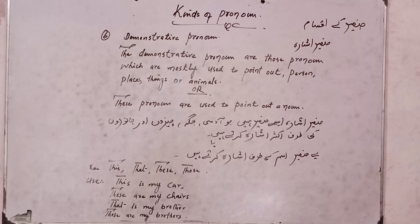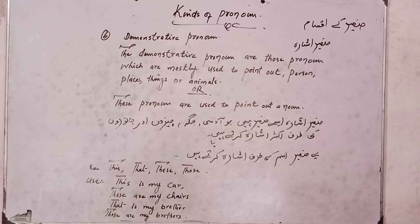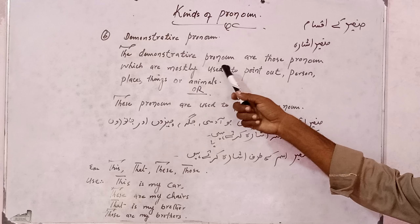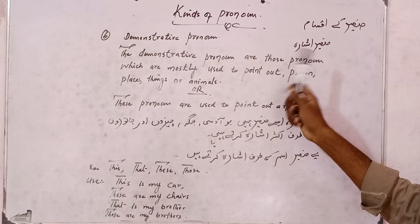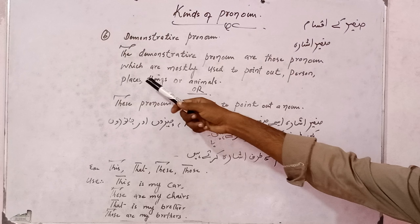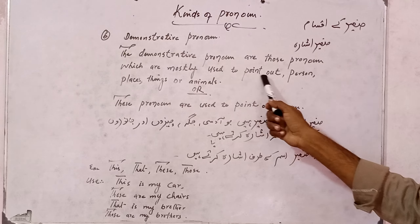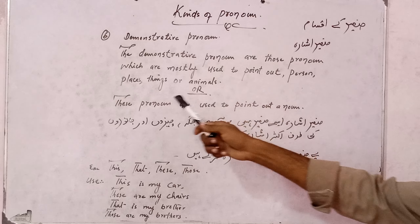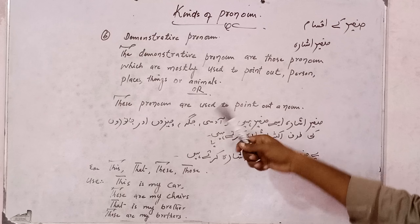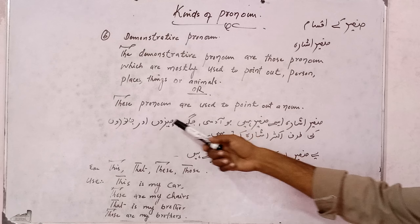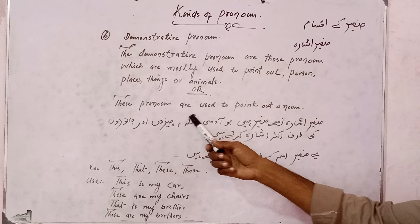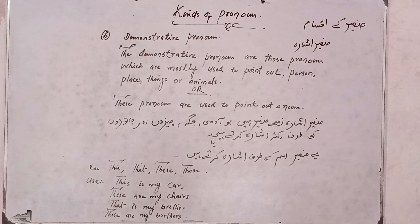What is demonstrative pronoun? These are pronouns which are mostly used to point out a person, place, things, or animals. These pronouns are used to point out a noun.